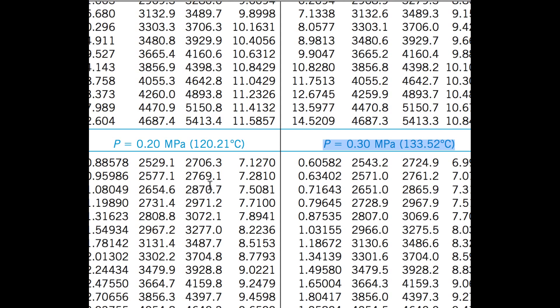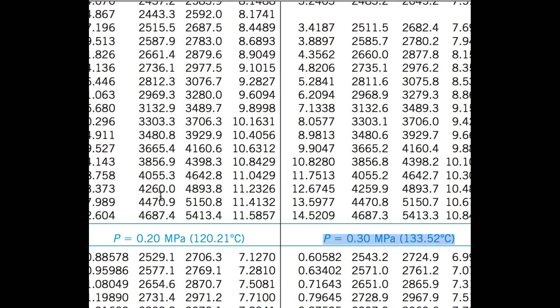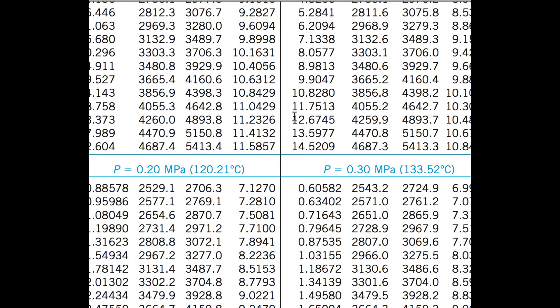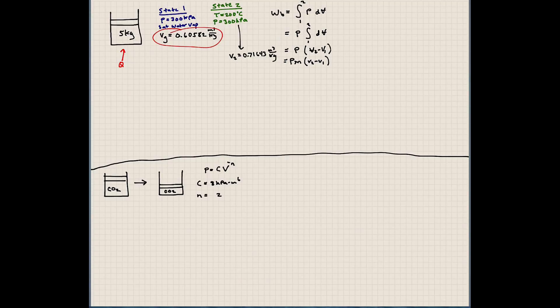And our temperature is here, 200 degrees Celsius. Let's make sure we're in the right column. It's the first one here. So in the first column, 200 degrees Celsius. Our vapor or specific volume here is 0.71643, and this is meters cubed per kilogram. Let me go back to our sheet here. So here's the new information I added just now.